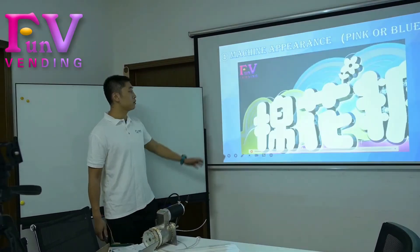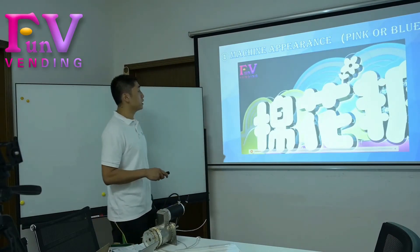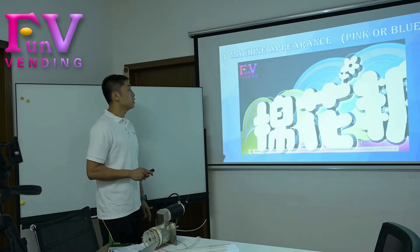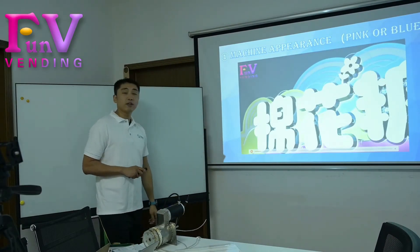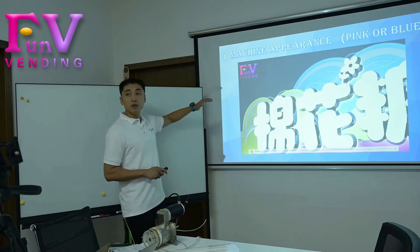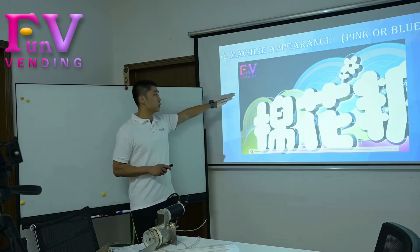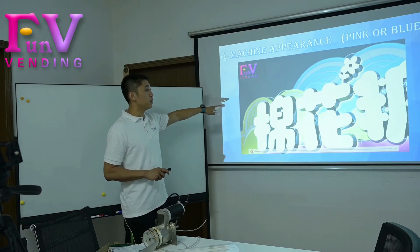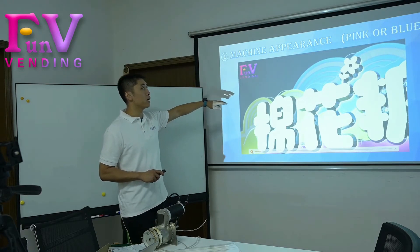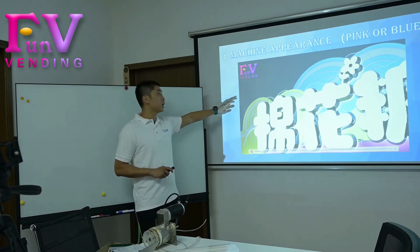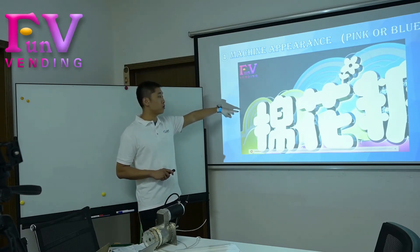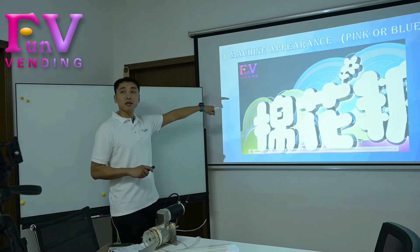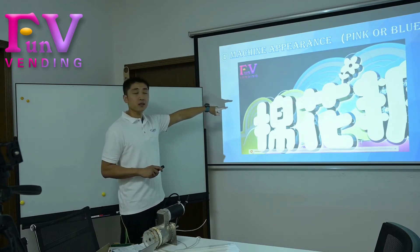You can see that this is our candy cotton machine. This is an LED that works on the top, and this is like a logo. Some of the customers would like to set their own logo, so we can change the logo on the top. And this is in the Chinese market.